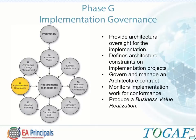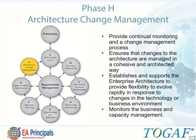Phase G, Implementation Governance, provides architectural oversight for the implementation. It defines architecture constraints on implementation projects, governs and manages an architectural contract, monitors implementation work for conformance, and produces a business value realization. Phase H, Architecture Change Management, provides continual monitoring and a change management process. It ensures that changes to the architecture are managed in a cohesive and architected way, and establishes and supports the enterprise architecture to provide flexibility to evolve rapidly in response to changes in the technology or business environment.